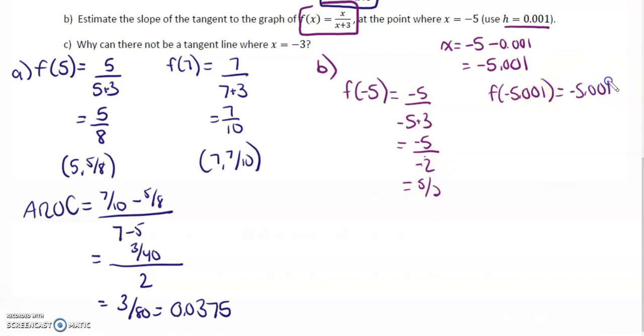Now, negative 5.001 over negative 5.001 plus 3, this is going to be negative 5.001 over negative 2.001, which gives me 2.499, which I round to 2.5. So we have the point negative 5 comma 2.5. Now we have negative 5.001 and 2.49925.